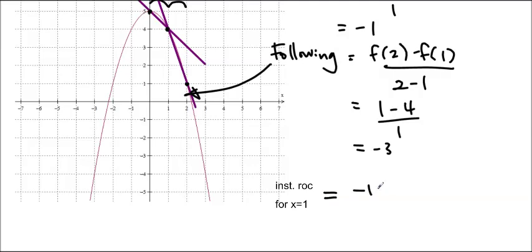So the instantaneous rate of change for x equals 1 is the mean of the 2. So it's negative 1 plus negative 3 over 2, which gives us negative 2. And that's the estimation of the slope of the tangent.